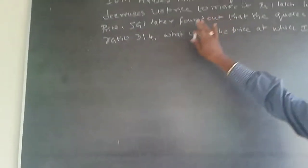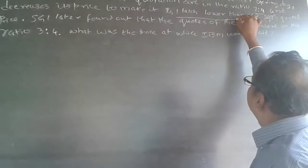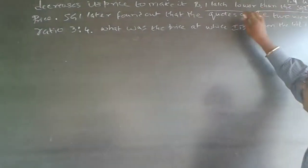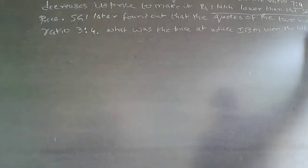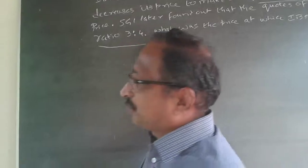Here, what it says is, IBM decreases its price to make it Rs. 1 lakh lower than SGA's quoted price. And the final ratio is 3 to 4.